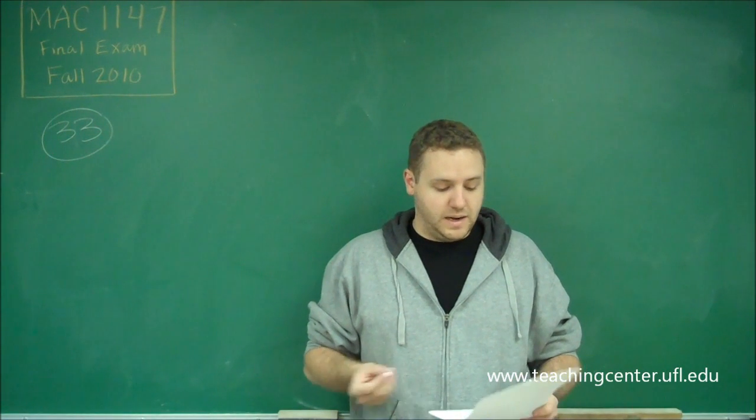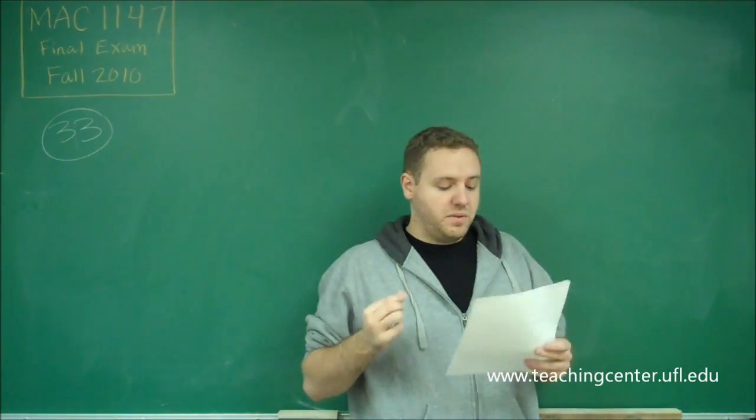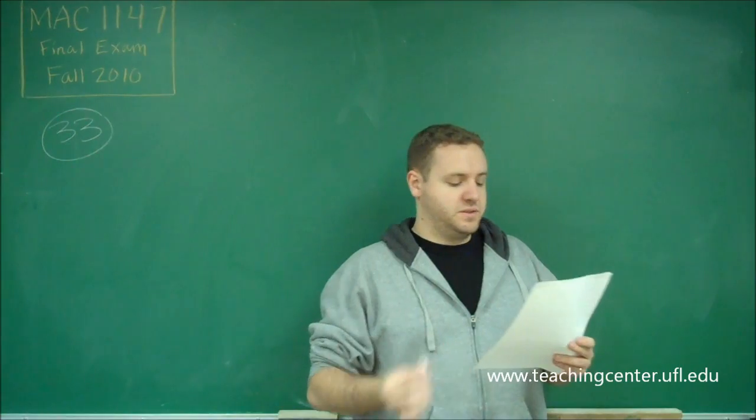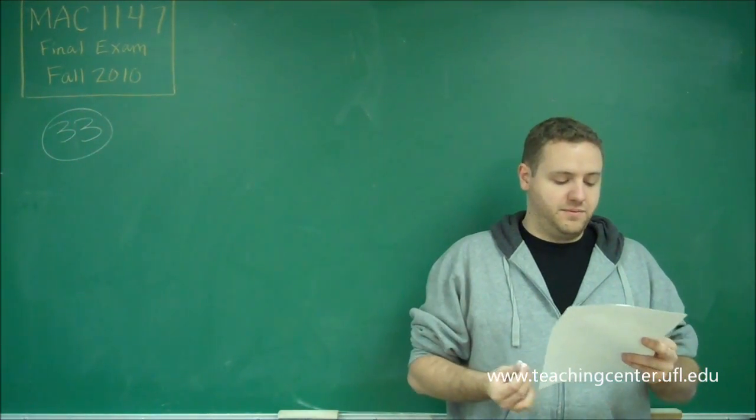Number 33 combines a couple of different topics into one question. We're asked to find the slope of the line that passes through the center of the circle with a given equation and the point 5, negative 3.